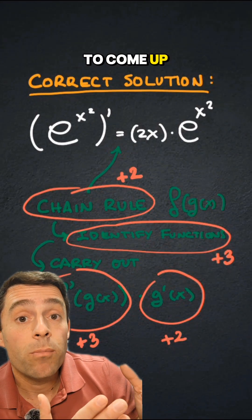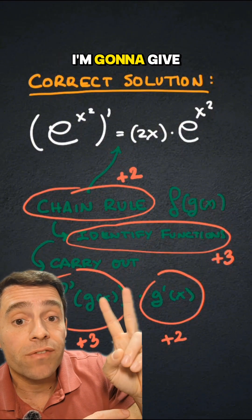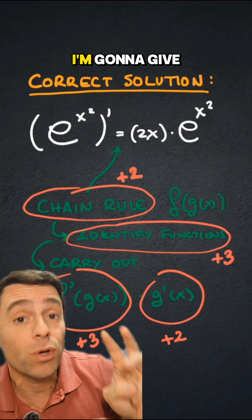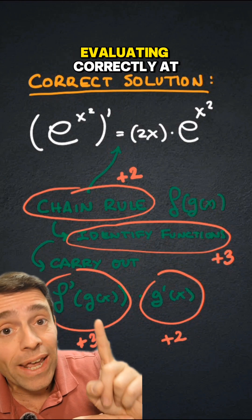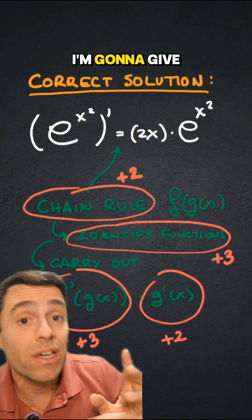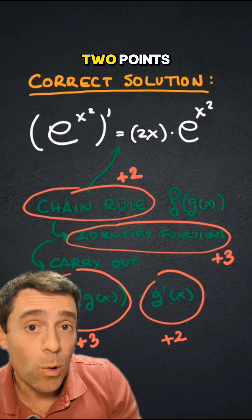Now we're ready to come up with a rubric. Identifying a chain rule problem, I'm going to give it two points. Identifying the functions themselves, I'm going to give it three points. Taking the derivative of f and evaluating correctly at g of x, I'm going to give it three points, and taking the derivative of g is going to be two points.